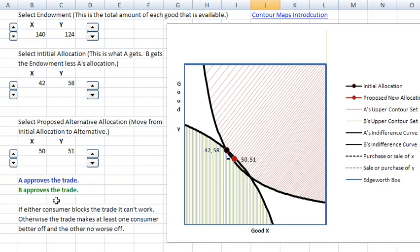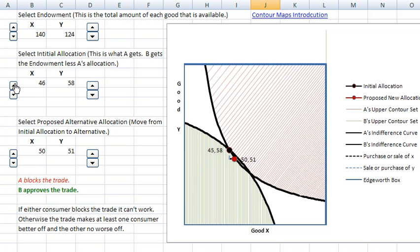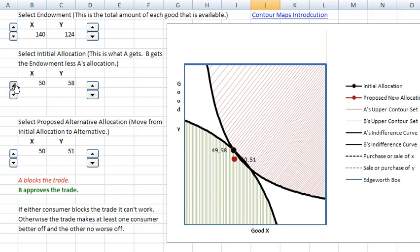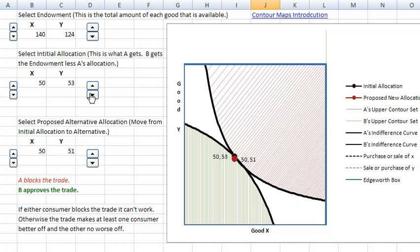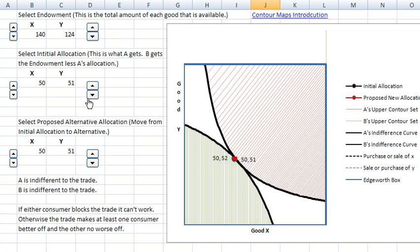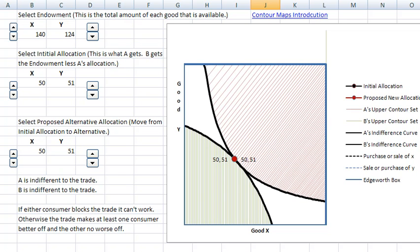Let's do one more. So let's go to 5051. I'm now going to do that, move the whole economy to 5051. And again, the points will be on top of each other. There we are.